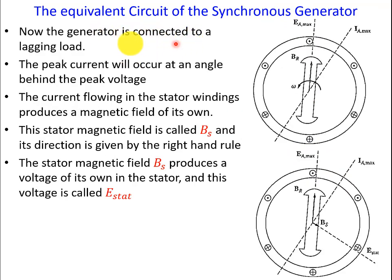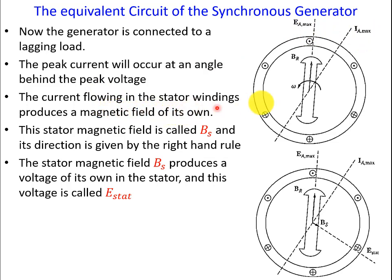Now suppose the generator is connected to a lagging load. The peak current will occur at an angle behind the peak voltage — that is, the current lags EA maximum. The current flowing in the stator produces a magnetic field of its own, which we call BS. The stator magnetic field BS and its direction is found by the right-hand rule.